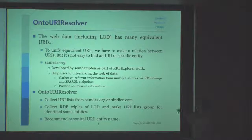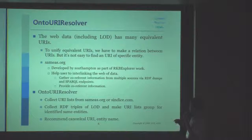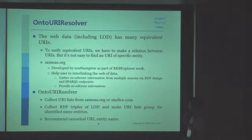With our URI resolver, we collect URIs from SameAs and UASCG.com. It collects identical URIs and makes URI groups for identified same entities. We recommend canonical URIs and entity names for each group.